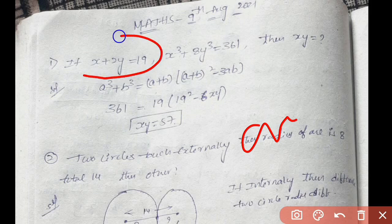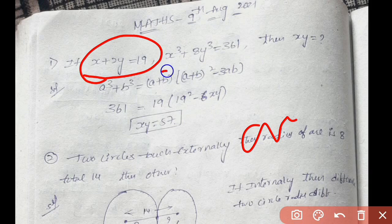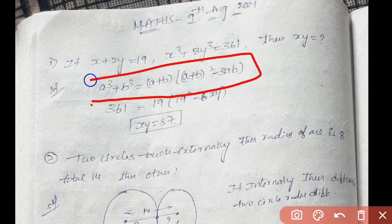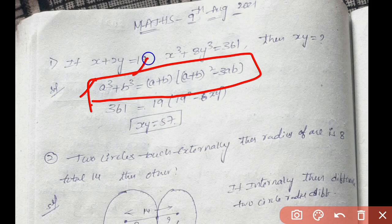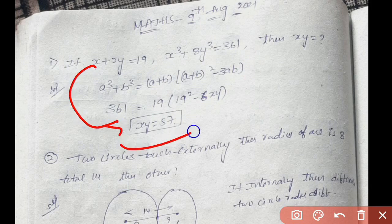Mathematics algebra formula. If we have xy, then use the formula. A cube plus B cube formula: A plus B into A plus B whole square minus 3AB. Check the xy value, easy to do.